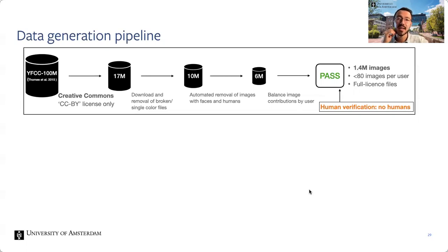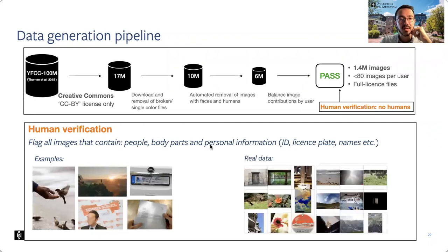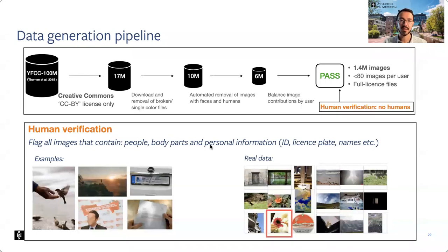In this way we achieve a dataset with fewer than 80 images per user, so no single user dominates the dataset. For the full CC-BY license, we get 1.4 million images. We further verify with human annotators that there are indeed no humans. We don't just remove images of humans — we also remove body parts and personal information in line with how GDPR is intended. There was one tricky image with just a hand that annotators caught.